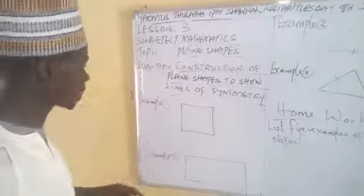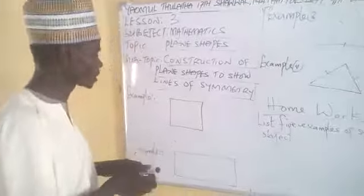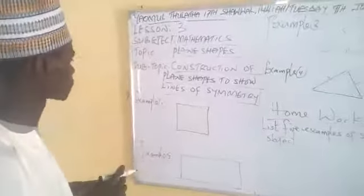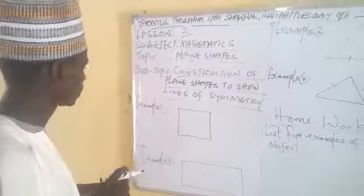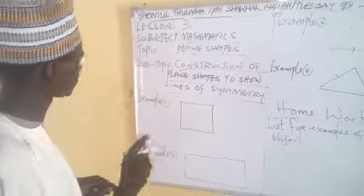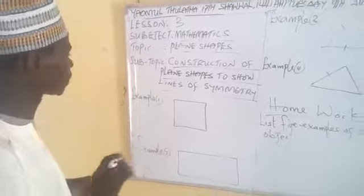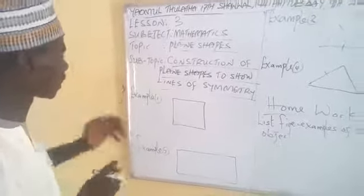Example 1 — this is a square, it's already drawn. We are going to see how to draw a line of symmetry in this square. A line of symmetry is an imaginary line that divides the shape into two equal halves.